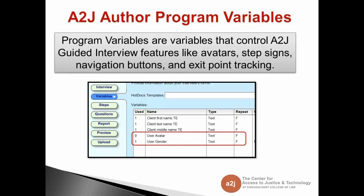So what is an A to J Author program variable? These are things you might not necessarily know about — they're kind of behind-the-scenes A to J secrets. The program variables are variables that control A to J guided interview features like avatars, the step sign, navigation buttons, and exit point tracking when you save and resume. Some automatically show up in the variable list and some just work in the background, waiting for you to use them.